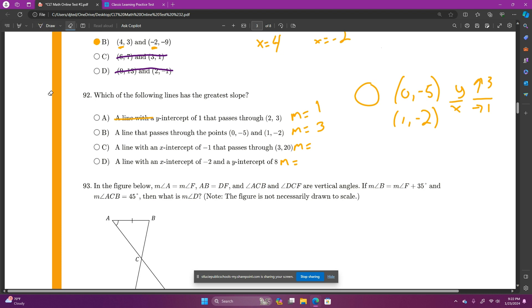And then, C says a line with an x-intercept of negative 1. So, when y is 0, x is negative 1, and passes through the point 3, 20. Change in y over change in x. My y goes up 20, while my x goes up 1, 2, 3, 4. Slope is 5. That's it.